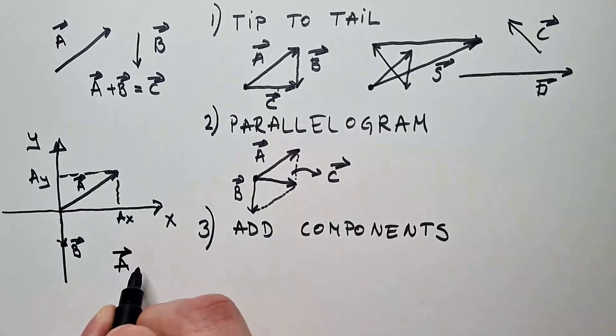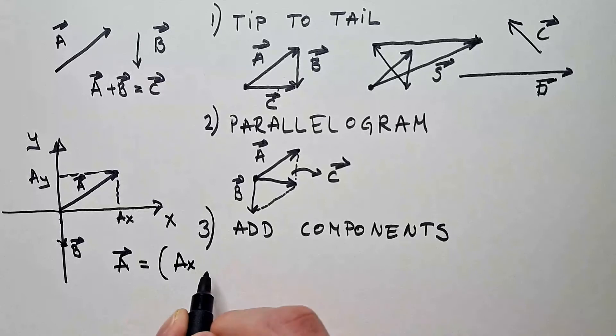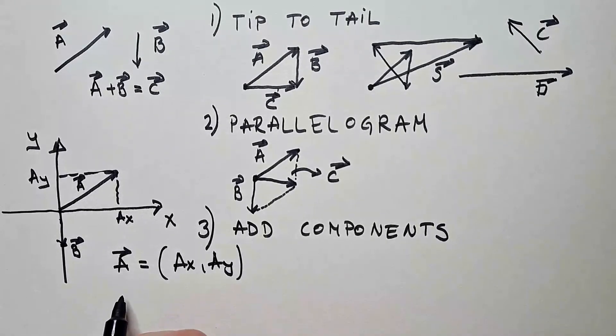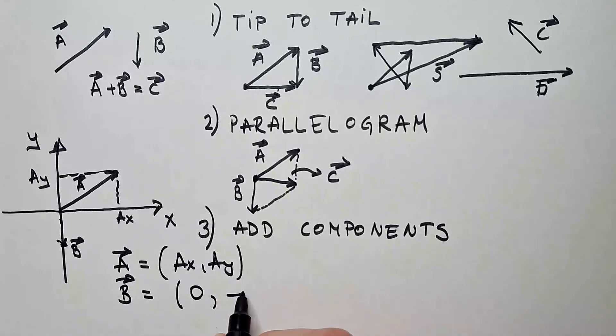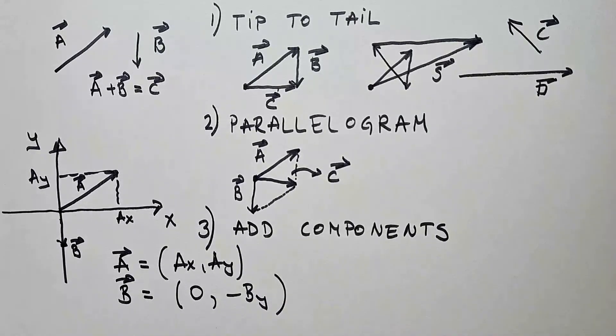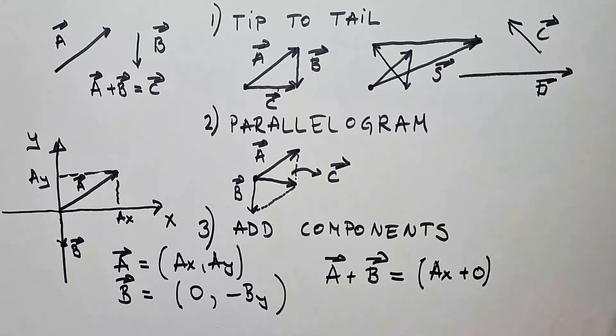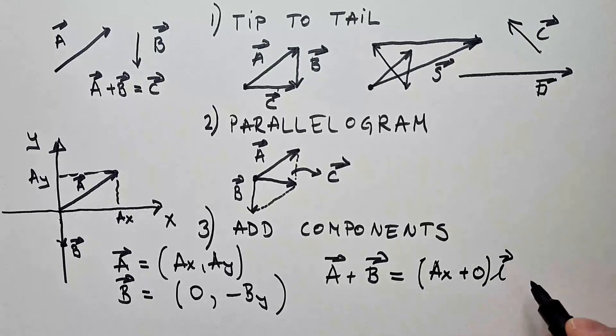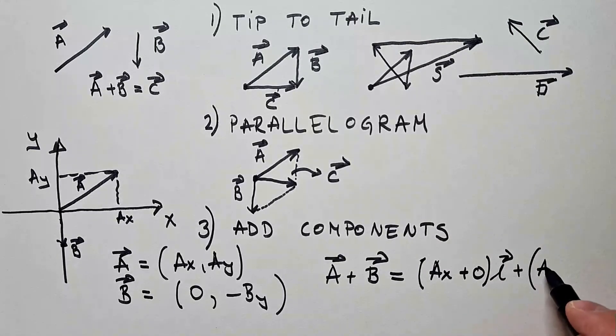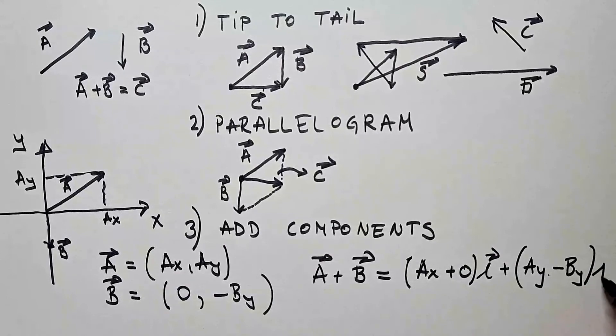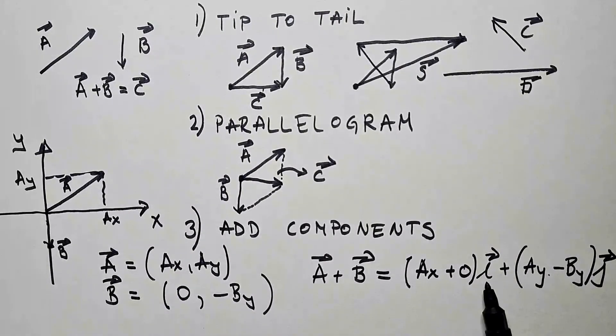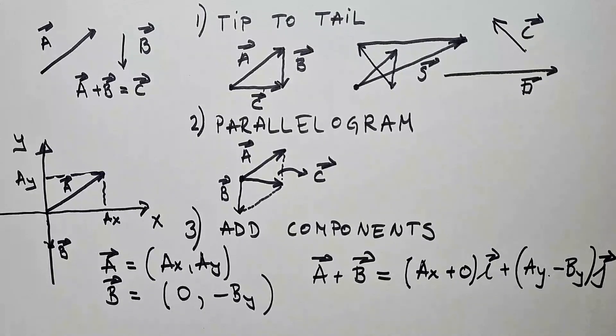That vector B would only have Y component and would not have X component. So I can say that vector A has components AX, AY, whereas vector B has components 0 and minus BY. So what is A plus B in this case? That would be equal, components AX plus 0 in the I direction plus AY minus BY. And that would be in the J direction, where we know from my video on unit vectors that these are unit vectors in X and Y directions, respectively.